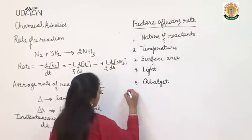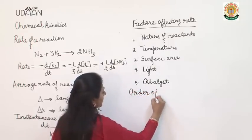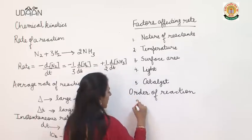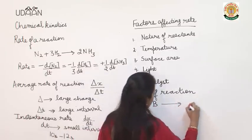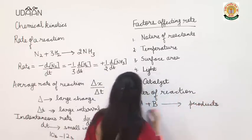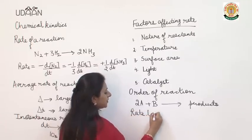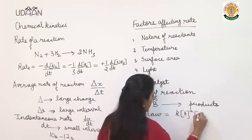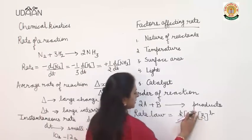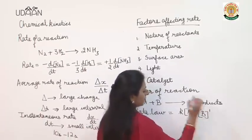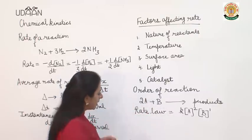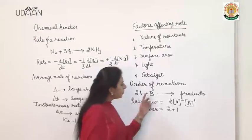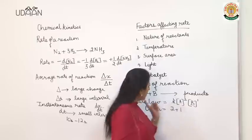Now let us understand the order of reaction. Suppose I have the reaction 2A + B going to products. The rate law, which is determined experimentally, is K[A]^a[B]^b. Suppose for this reaction the powers are 2 and 1. The order would be 2 plus 1 equals 3. So order is the sum of powers of the concentration terms in the rate law equation.